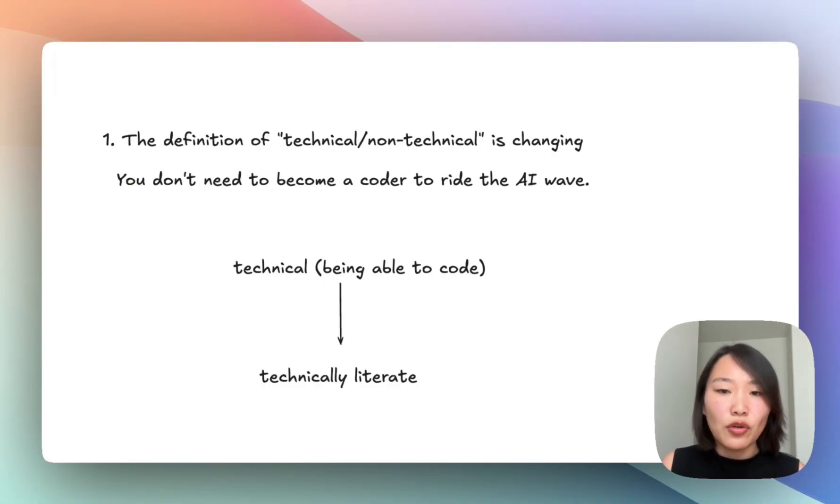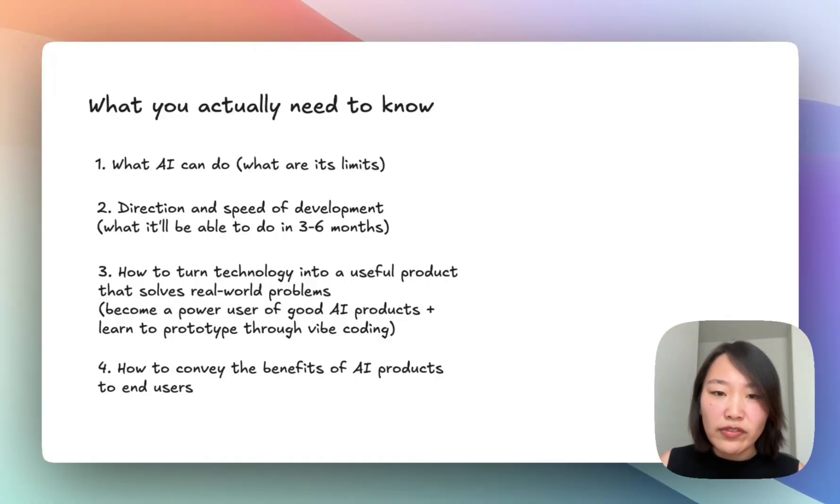What do I mean by that? Here's what I think you actually need to know to become technically literate. You should understand what the state-of-the-art AI models can do, what are their limitations and potential. You should understand the direction and speed of the development, so follow industry news and understand what it will be able to do in three to six months.